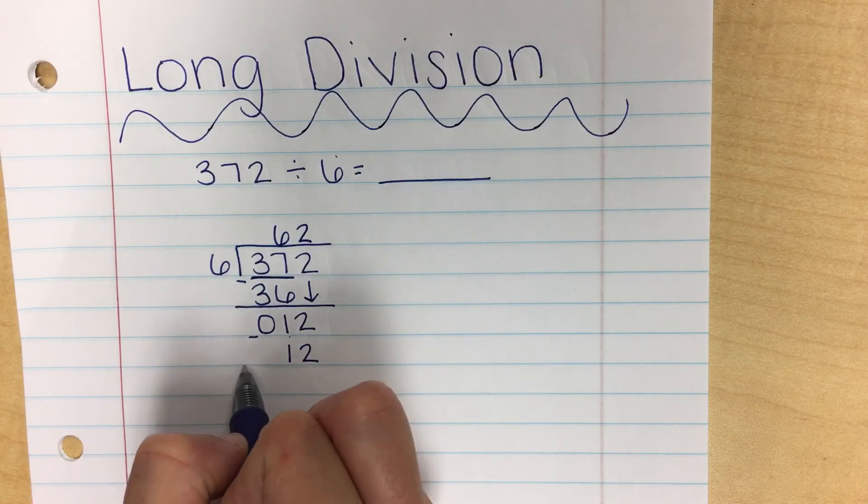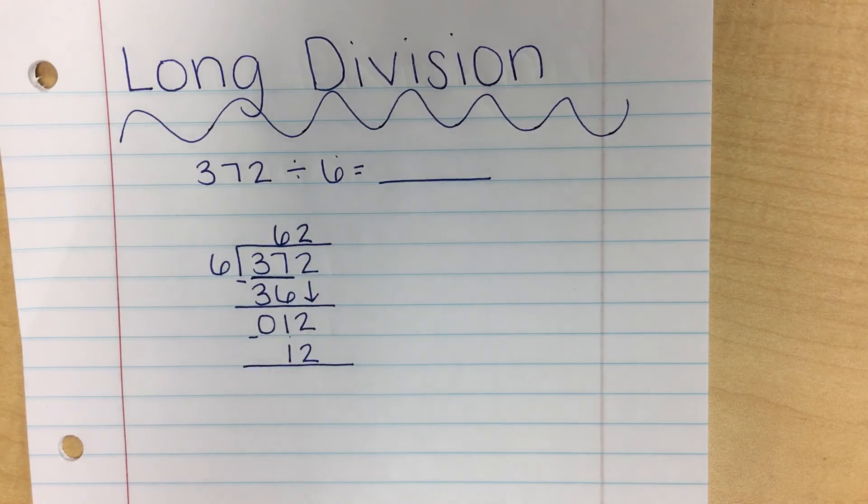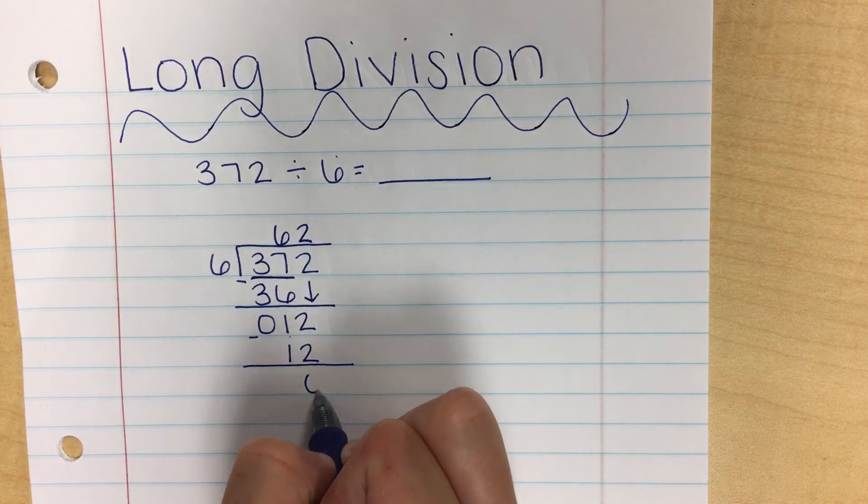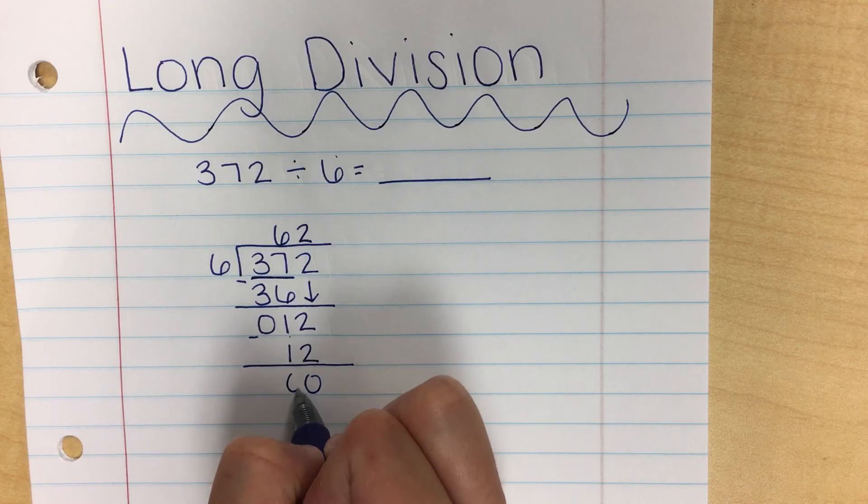And then again, I'm going to subtract. 2 take away 2 is 0. 1 take away 1 is 0.